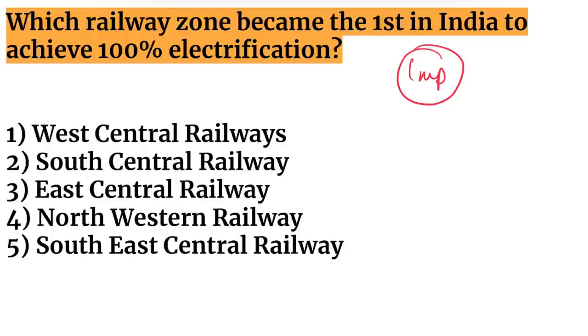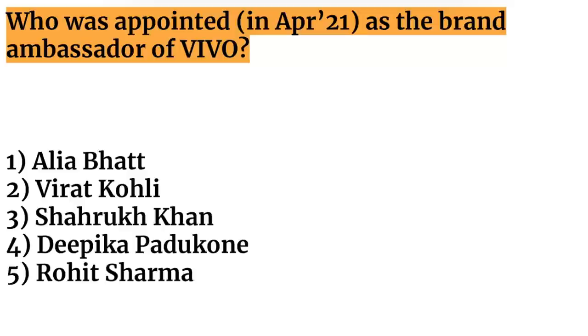Which was the railway zone in India to achieve 100% electrification? It was the West Central Railway Zone.